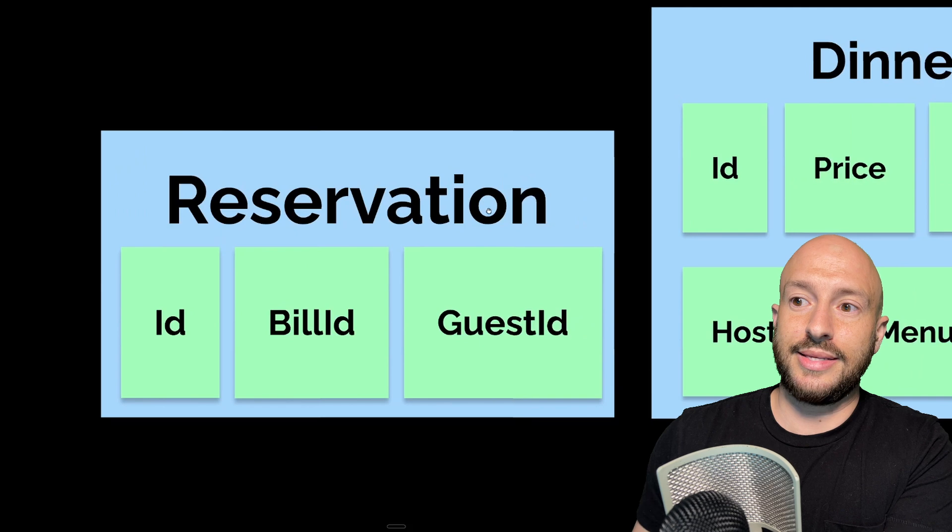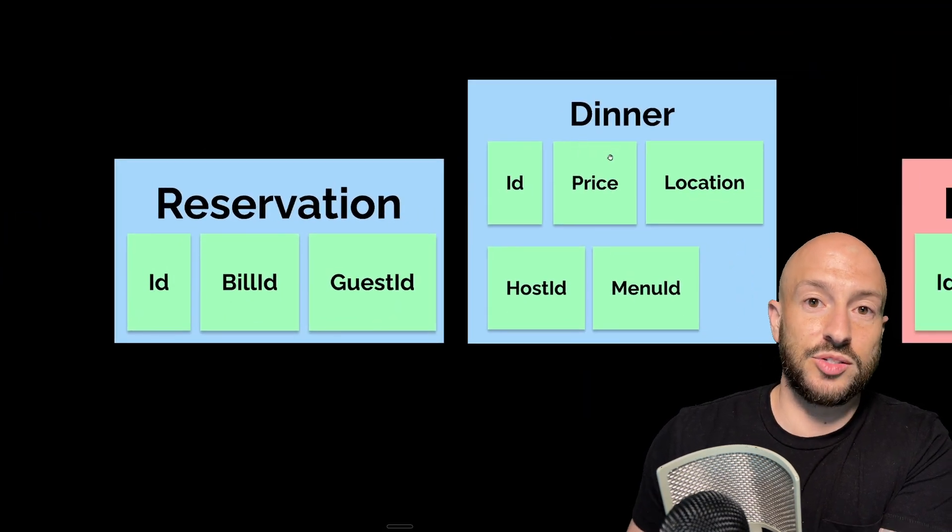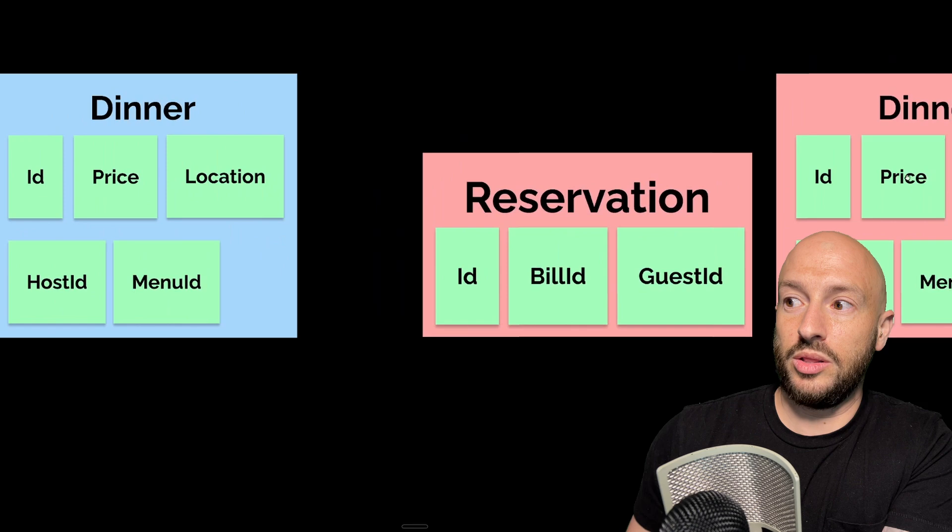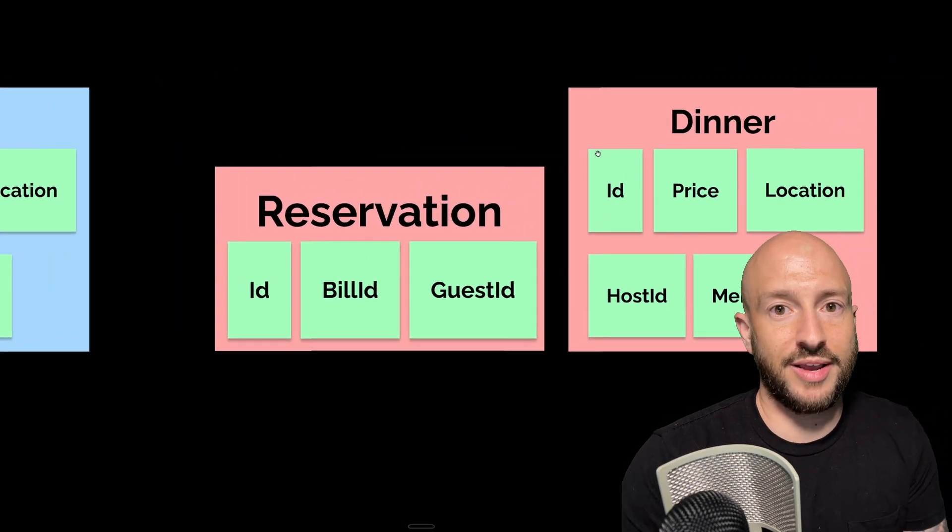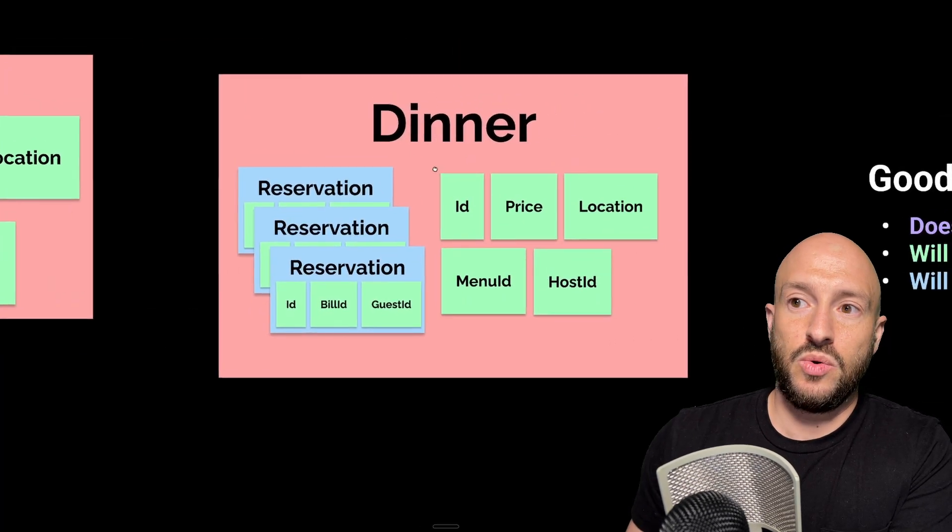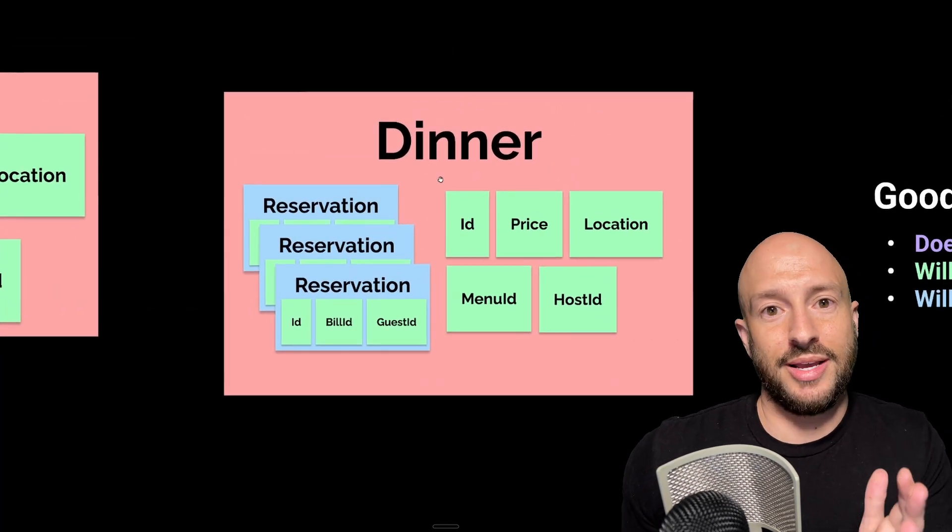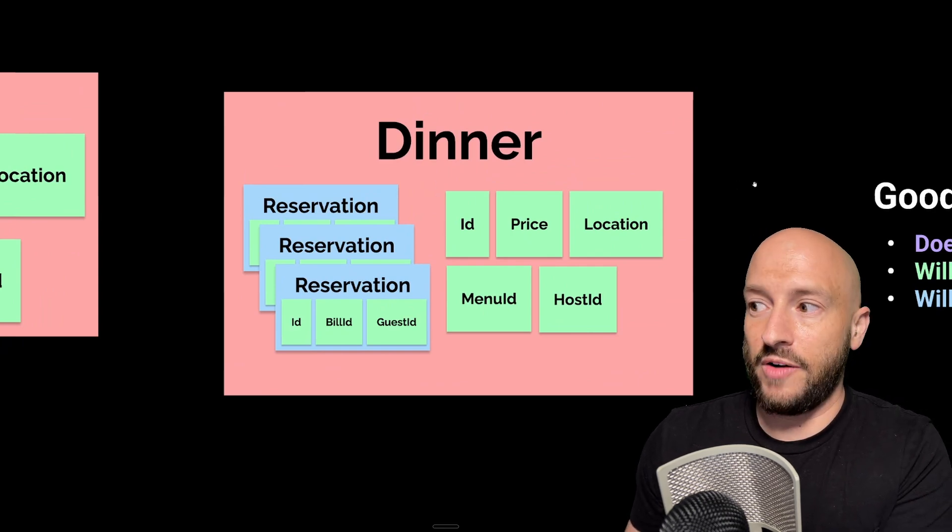Looking at our example, we have our two entities, the reservation and the dinner, we look at them as two aggregates. Then because we always want the number of guests to be less than the maximum guests that are allowed, we merge the reservation aggregate into the dinner aggregate and we end up with the following structure.